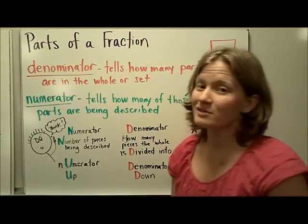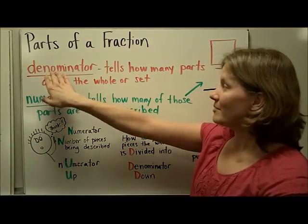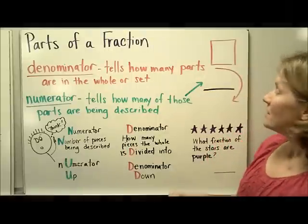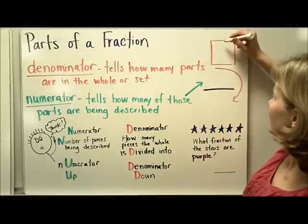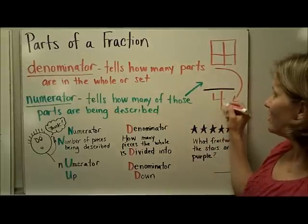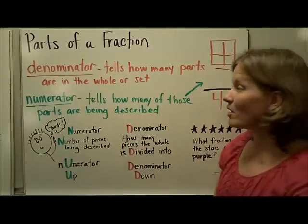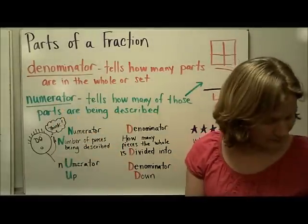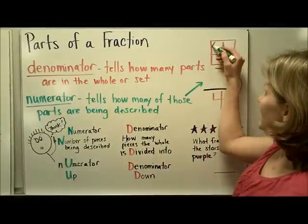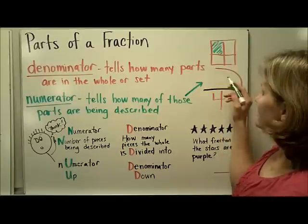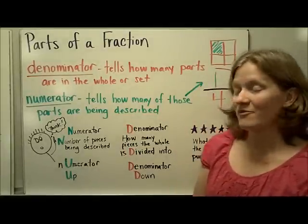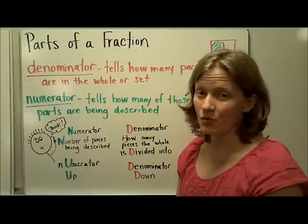Let's talk about the parts of a fraction. There's two important words that we need to know. The denominator tells how many parts are in the whole or the set. So if I take this square and divide it into four parts, I would say that the denominator is four, because I've divided it into four equal parts. The numerator tells how many of those parts are being described. So if we shade in one of those four parts, the numerator becomes one, and this fraction is one fourth.